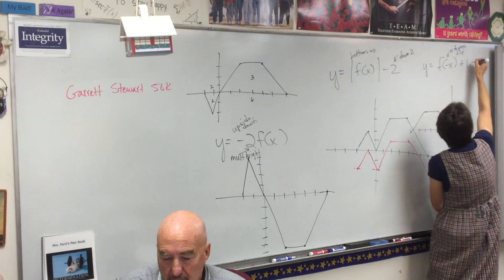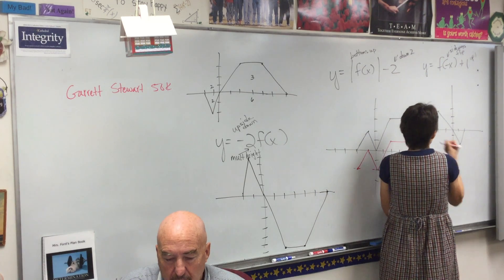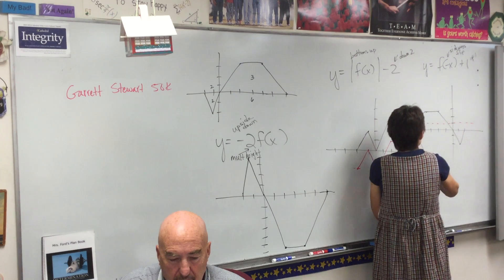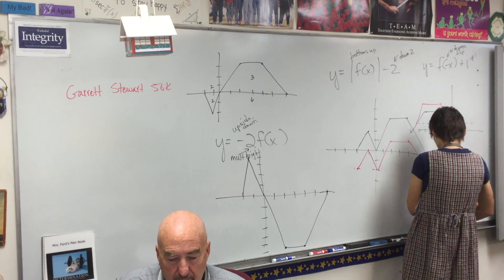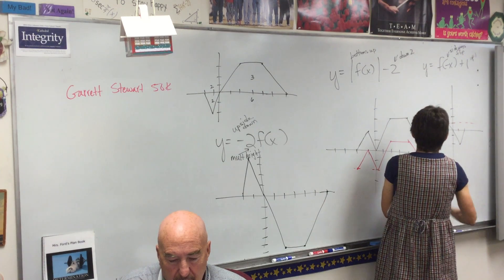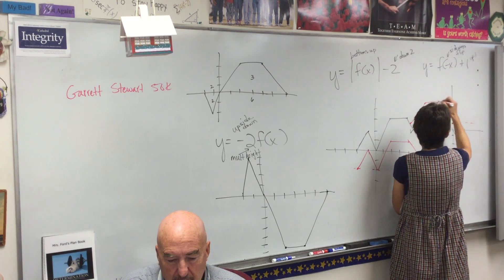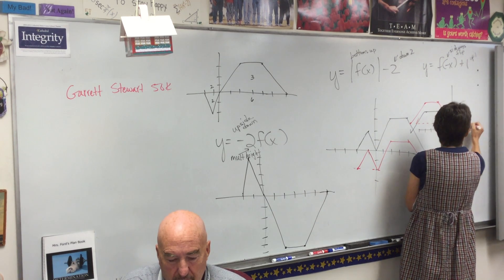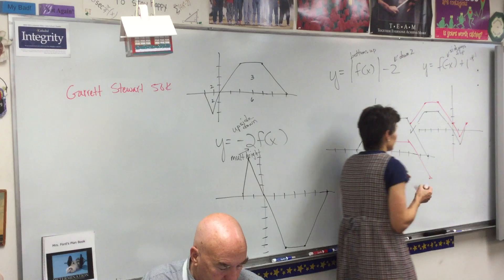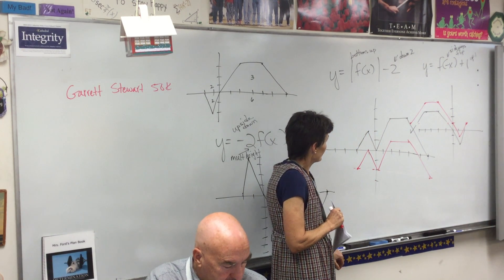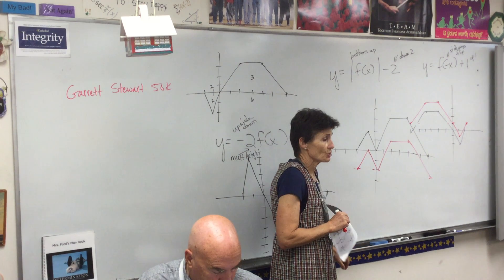Then what does that do? Up one. So I'm going to take this flip thing here that I just did, and I'm going to raise it up one. So if it helps you, you're going to draw it. Oh, that's not right. It's easier for me to do it point by point. There we go. So there's my red one is my answer. Does anybody have a question about those three? I'm getting ready to erase them to do the last two. Any issue with any of those?